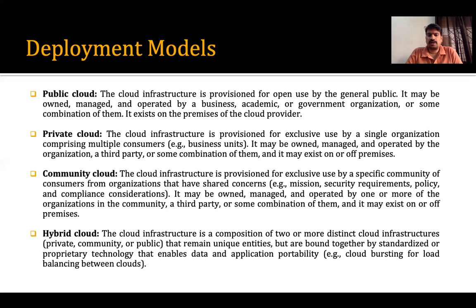This is called cloud bursting for load balancing between clouds. In the hybrid cloud infrastructure, it is a combination of two or more distinct cloud infrastructures — it may be private and community, community and private, or private and public. Any combination can be used. The main advantage is that it takes the benefits of the private cloud as well as the public cloud, combining the advantages of both.